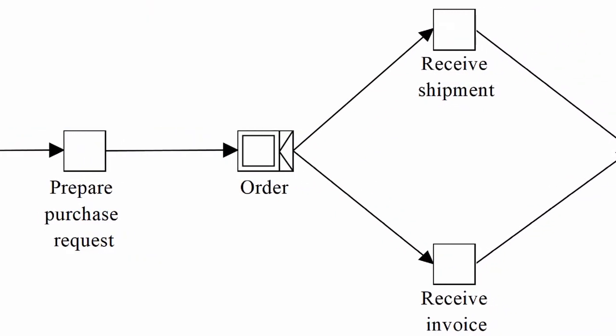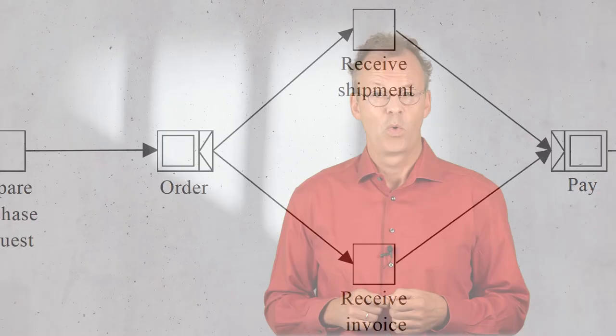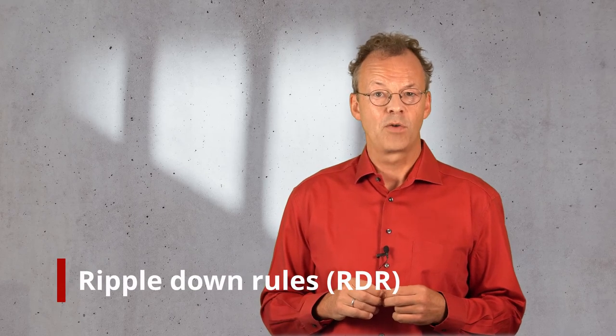As already said, you cannot think of all possibilities when first designing a workflow specification. So in the first category of flexibility, we have concepts in YAWL like worklets that specify a certain behavior and you are able to invoke those worklets using so-called ripple down rules.